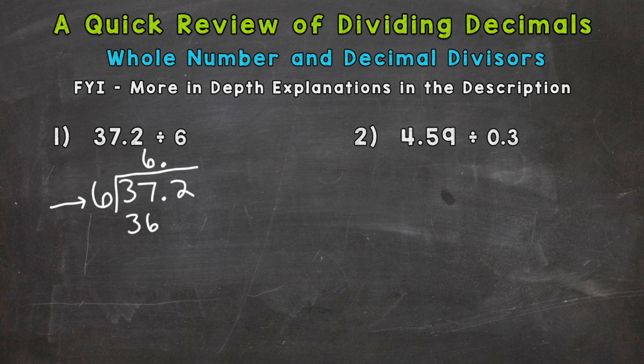12 divided by 6—how many whole groups of 6 can we pull out of 12? Two. 2 times 6 is 12. Subtract and we get 0, so our answer is 6.2. Again, if you have a whole number divisor, you can bring that decimal straight up.